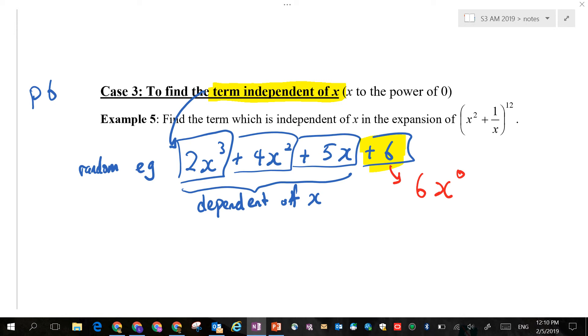Therefore, this kind of term is called constant. And it is also called the term independent of x. So, if you see in the question, what is the term that is independent of x? Straight away write down x to the power of 0. With this, I complete the syllabus.